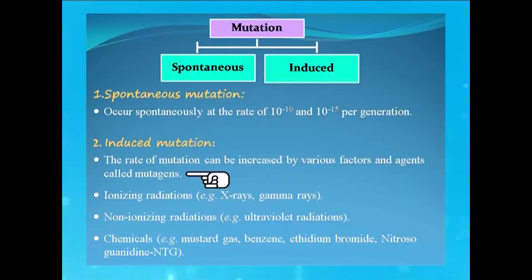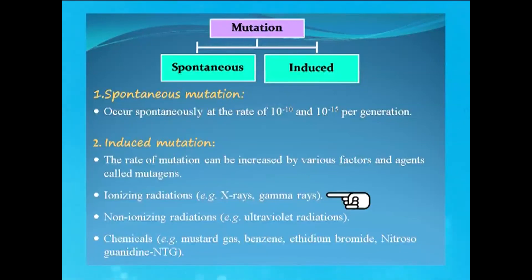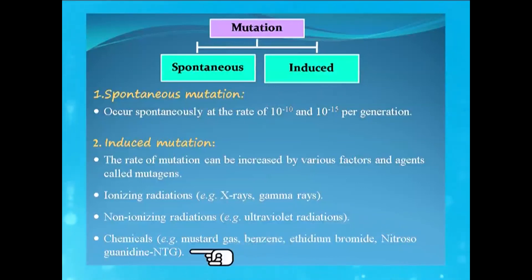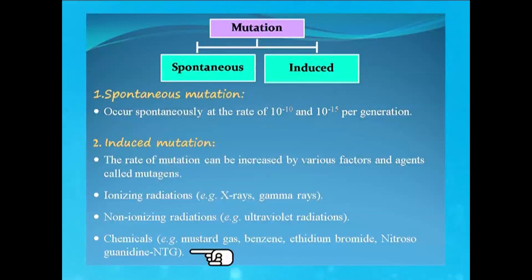Several factors can act as mutagens. For example, ionizing radiations such as X-rays and gamma rays can act as mutagens. Non-ionizing radiation such as ultraviolet radiation can also act as a mutagen. There are certain chemicals — for example, mustard gas, benzene, ethidium bromide, nitrosoguanidine, etc. — which can also act as mutagens and cause mutation in DNA.